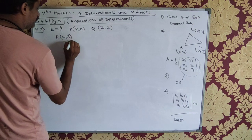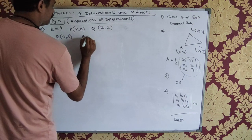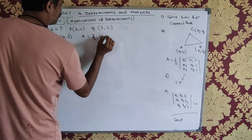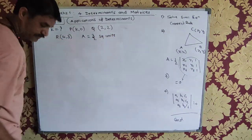3 by 2 square units. This area is equal to 3 by 2 square units.